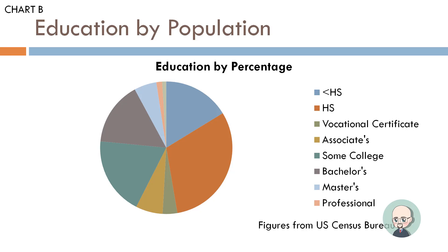Chart B is education by population and education by percentage. The colors represent different education levels: blue is less than a high school education, orange is high school, there's a greenish color for vocational certificate, brownish for associates, greenish for some college, gray for a bachelor's, light green for a master's, and pink for a professional degree. Chart B is a pie chart.